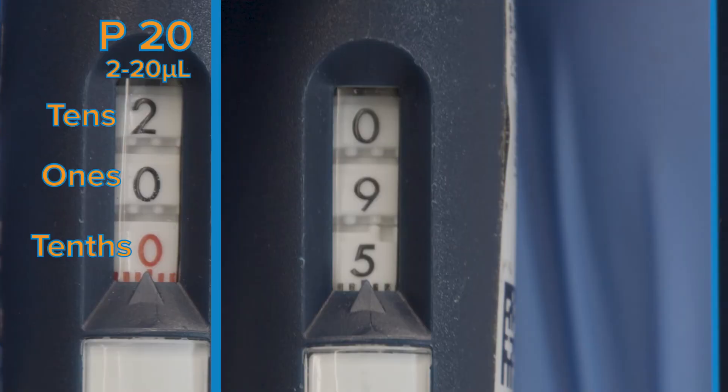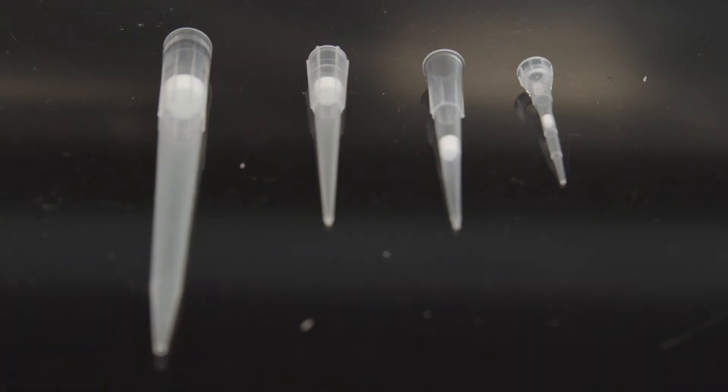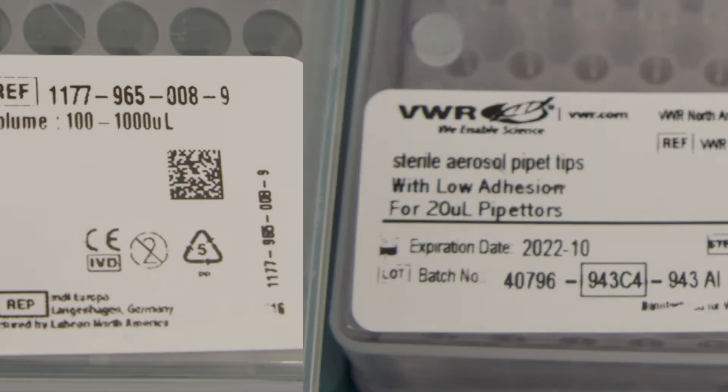The P20, P10, and P2 all follow similar patterns. Keep in mind that this dictates what tips you'll be using. Different tips hold different volumes of liquid. Check the information on the box to find out the volume range for each tip.